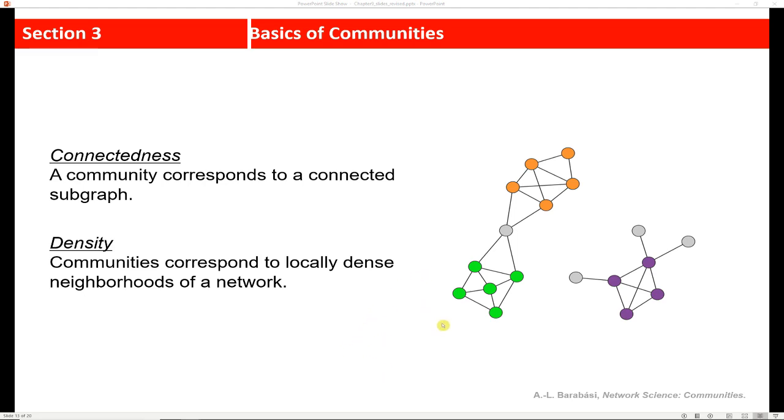So if you think about a graph here, a subgraph is just a graph within a graph. So you can see that this graph has two distinct connected subgraphs. And they're actually quite dense. So the density, meaning that if we take a look at this subgraph here, we can see that the nodes are pretty heavily connected. So they share a lot of different connections. So communities correspond to locally dense neighborhoods of a network.